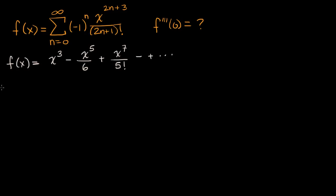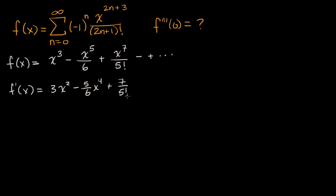Now let's take the derivative. F prime of x, applying the power rule, is going to be three x squared minus five sixths x to the fourth plus seven over five factorial x to the sixth, and so on, alternating minus and plus forever.